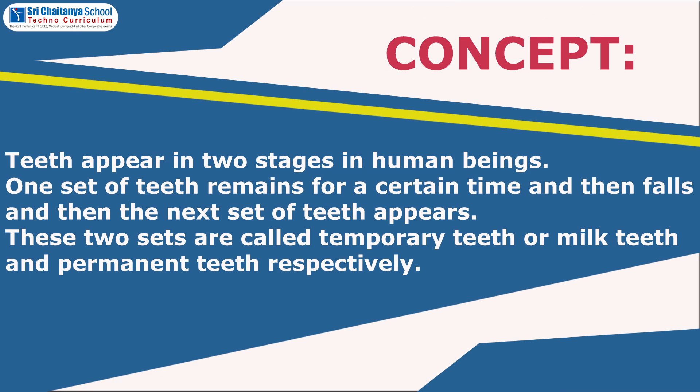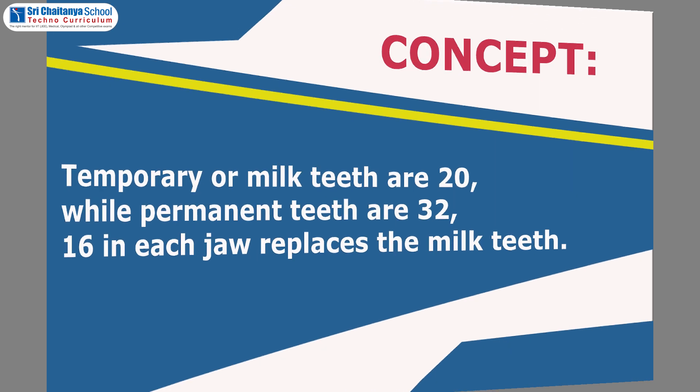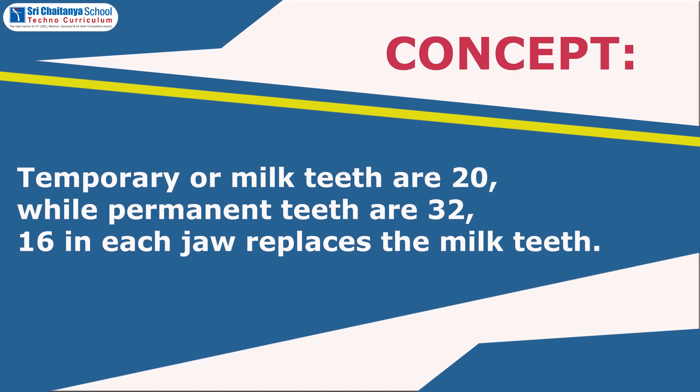Concept: Teeth appear in two stages in human beings. One set of teeth remains for a certain time and then falls, and then the next set of teeth appears. These two sets are called temporary teeth or milk teeth, and permanent teeth respectively. The temporary teeth are 20 in number, while permanent teeth are 32 in number. Each jaw consists of 16 teeth. They replace the milk teeth.